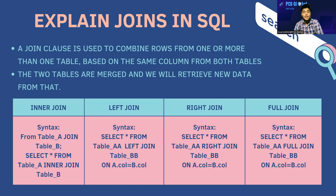INNER JOIN returns the joined table based on the matching rows from both tables. LEFT JOIN returns the matching rows that are in the left table but not in the right table. RIGHT JOIN is the reverse of LEFT JOIN — it returns matching rows that are in the right table but not in the left table. FULL JOIN is the combination of LEFT JOIN and RIGHT JOIN — it returns all records from both the left and right tables.